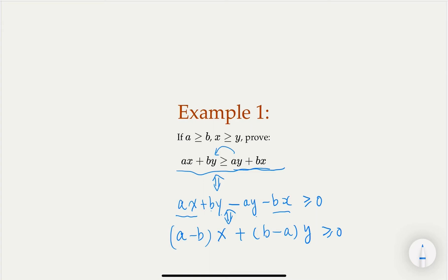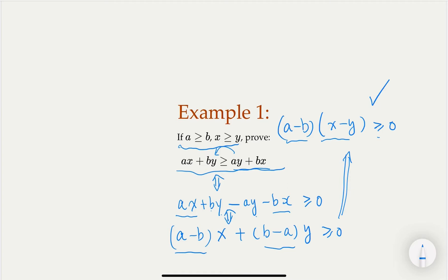So factoring out (a − b) as a common factor, we want to prove (a − b)(x − y) ≥ 0. We are given that a ≥ b, so a − b ≥ 0, and x ≥ y, so x − y ≥ 0. Positive times positive is positive, so the product is non-negative, and we are done. This is simple algebra using the fact that a positive number times a positive number is a positive number.